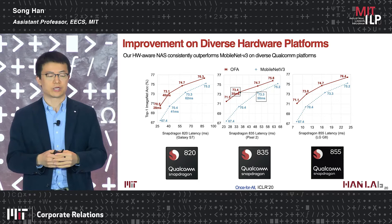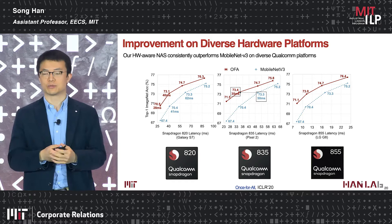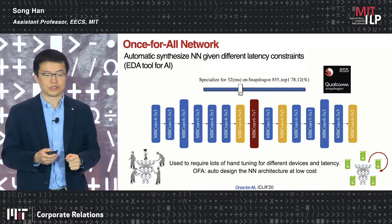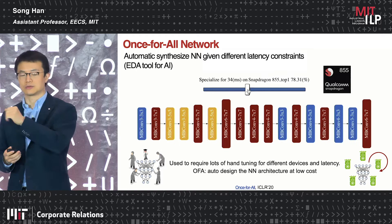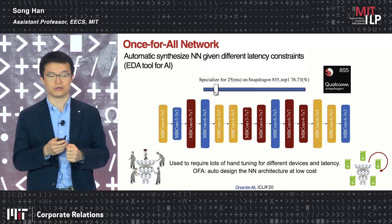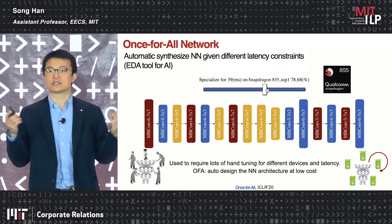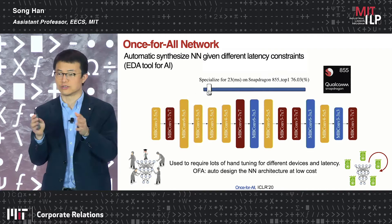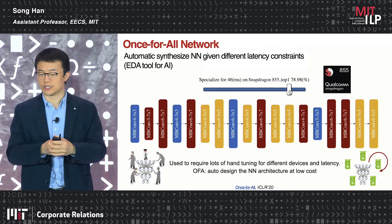We no longer require training different times; training just once gives the entire Pareto-optimal curve of the latency-accuracy trade-off. Not just on a single chip — when we have diverse chips, the once-for-all network generates different subnetworks that fit diverse hardware platforms without retraining for each scenario. We also have a tool where you can slide left for a faster and less accurate model, or slide right for a slower but higher-accuracy model — like an EDA tool for neural networks, auto-designing for a given latency and hardware platform.